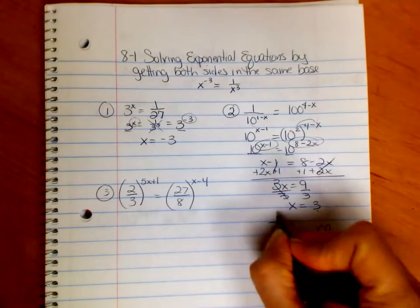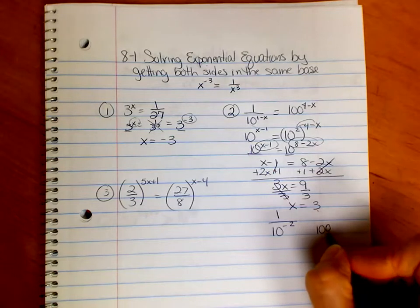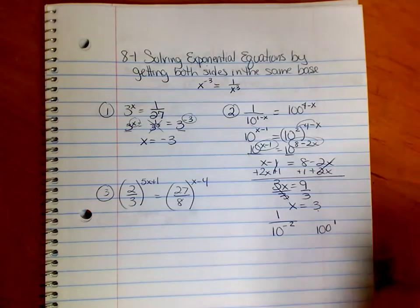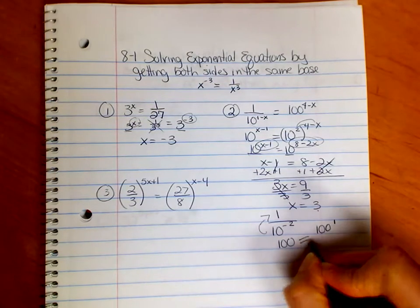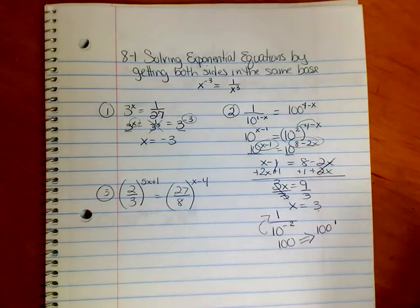Oh, I'm sorry, this was 1 over 10 to the negative 2. We get 100 to the 1, which is just 100. This negative tells me I need to move it up. That becomes 100, and 100 does equal 100. And that's our check.